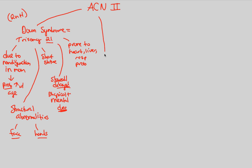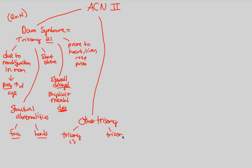Trisomy 21 is not the only trisomy — there are other trisomies, but they are much less common. The other ones are specifically trisomy 13 and trisomy 18, both of which have common names, named after the people who discovered them. Trisomy 13 is also known as Patau syndrome, and trisomy 18 is otherwise known as Edwards syndrome.